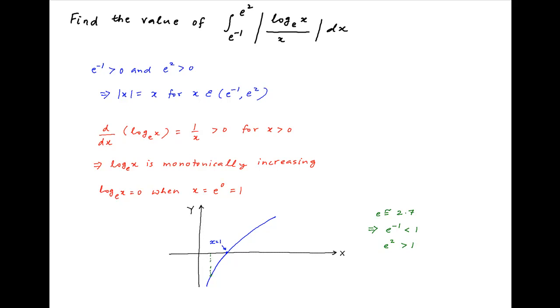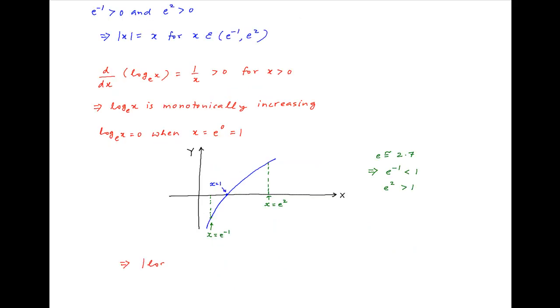We show these on the Cartesian plane. At e raised to the power minus 1, ln x is negative, and at x equal to e square, since x is greater than 1, the value of ln x is positive.